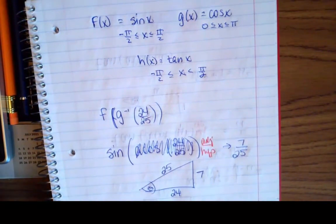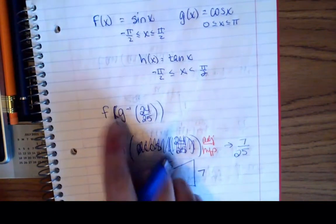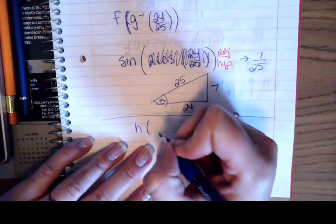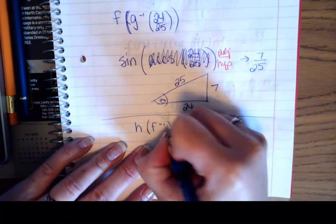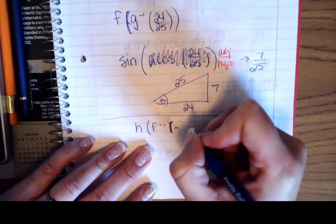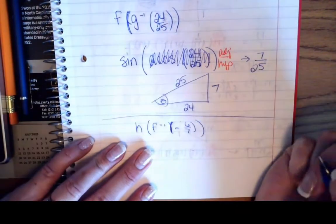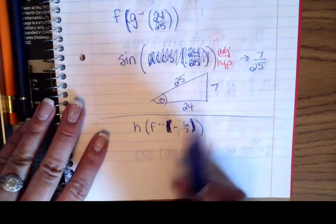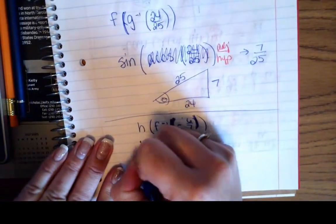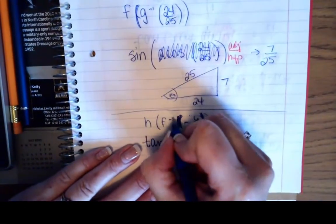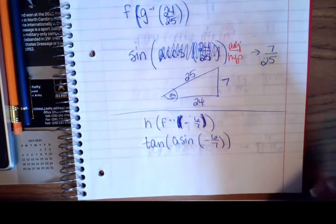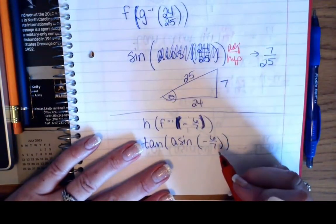Let's do one more: h of the inverse of f at −6/7. h is tangent and the domain is already restricted, so I have tangent of arc sine of −6/7. It's not a benchmark ratio. I can work backwards and build a triangle because I was given a ratio — opposite over hypotenuse.